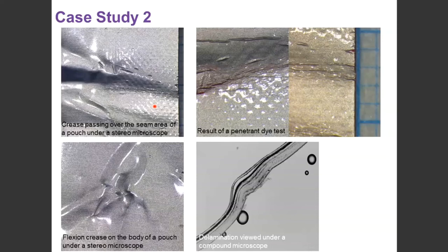In microscopy, we'd take those sections, have a look at them under the compound microscope, and look if there are any presence of delamination, if there's presence of any of the polymer layers breaking, or that aluminum breaking as well.